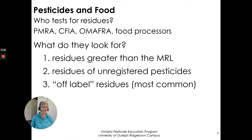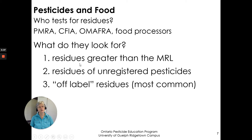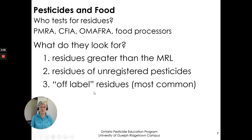Who tests for residues? We have quite a few organizations that look after that for Canada: the PMRA, the Pest Management Regulatory Agency; the CFIA, the Canadian Food Inspection Agency; OMAFRA, our Ontario Ministry of Agriculture, Food and Rural Affairs; and food processors also test for residues. They look for residues greater than the maximum residue limit, residues of unregistered pesticides, and off-label residues — something not labeled for use on a particular crop but found on that crop.